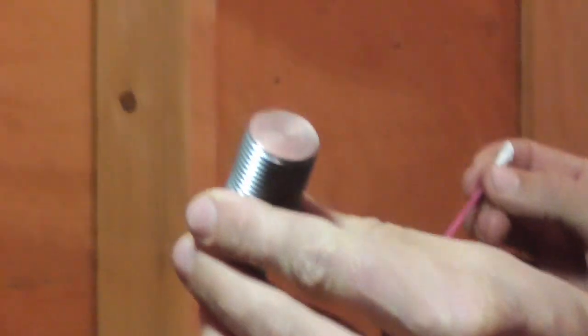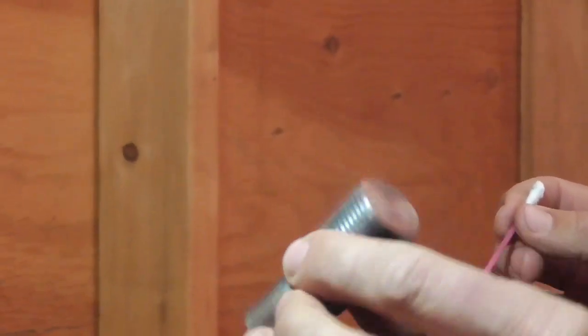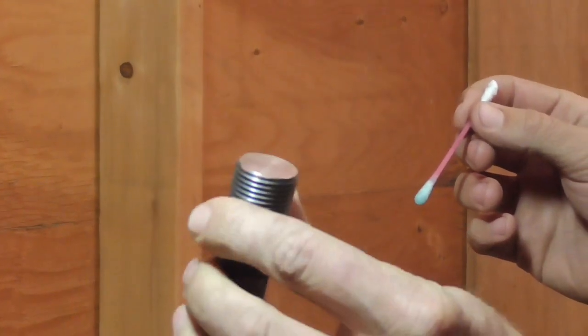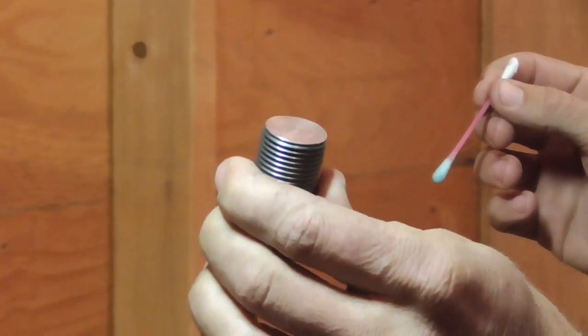There. Can you see that? Can you see the difference in color between that end of the steel and the end we just plated with copper?